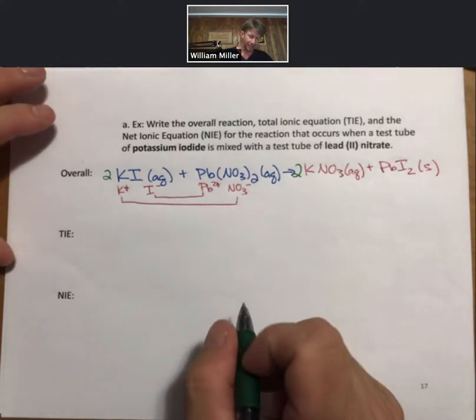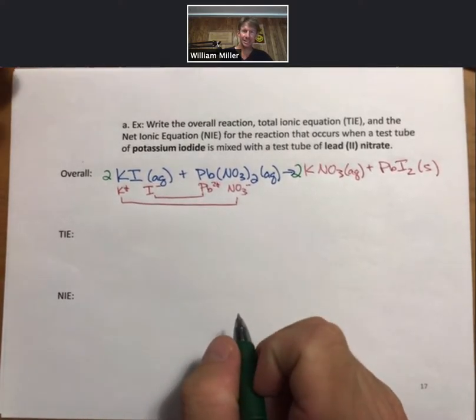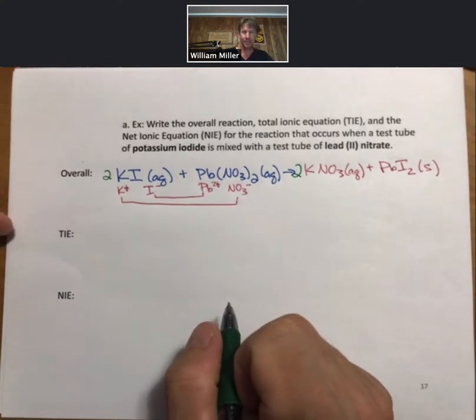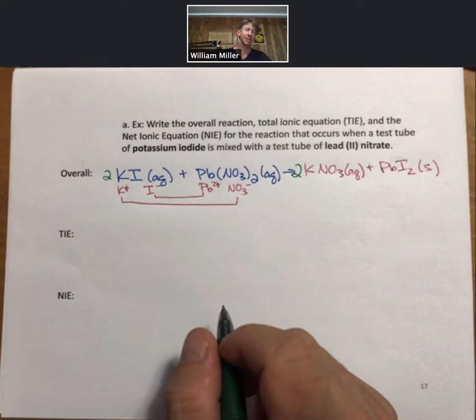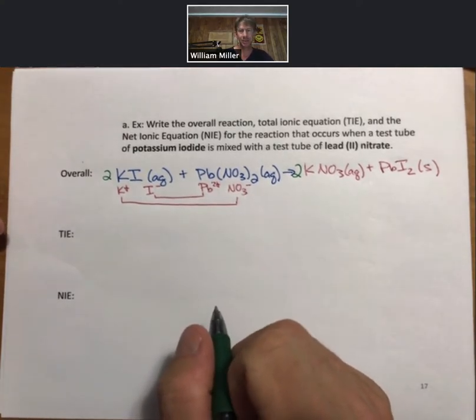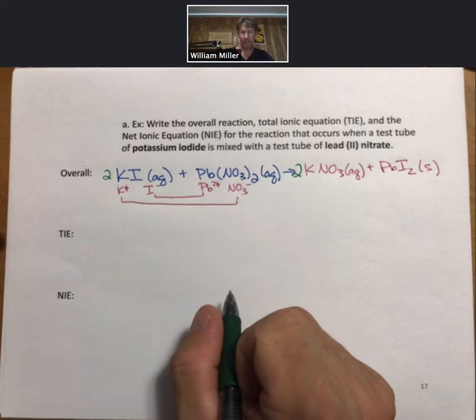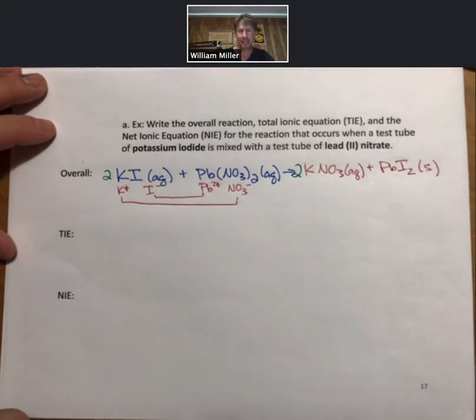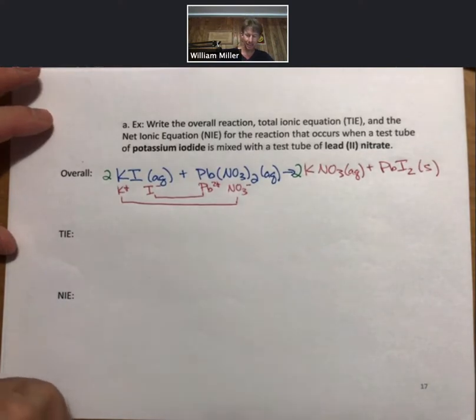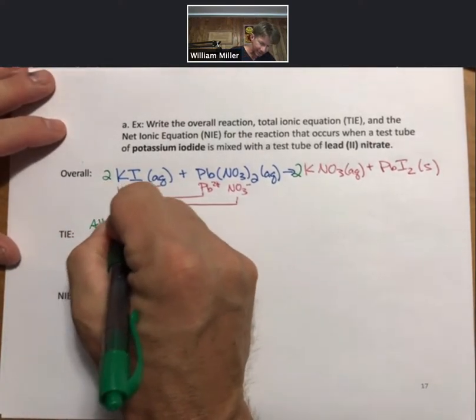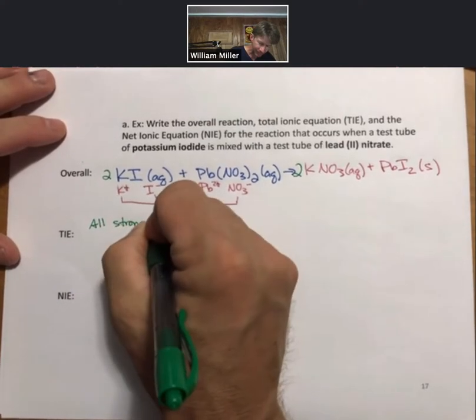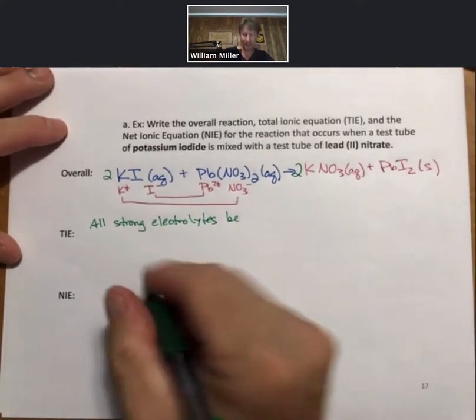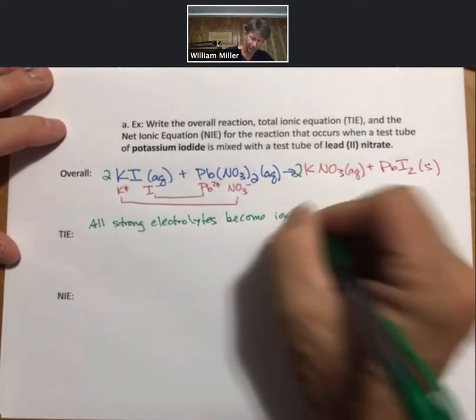Now, the total ionic equation, what is it? So it writes all ions as ions and all solids, liquids, and gases as molecules or formula units. So what we're going to do is we're going to, let's have a working definition of the TIE. In a TIE, all strong electrolytes become ions, and I'll show you what that means.